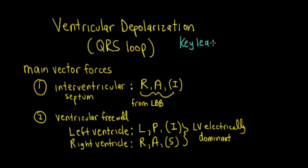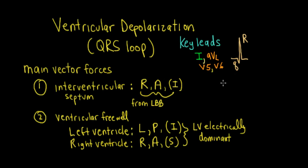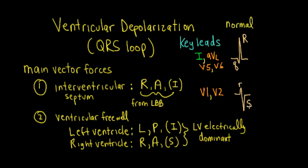In summary, for key leads 1, AVL, V5, and V6, we should see a small Q and a dominant R — the small Q representing interventricular septal depolarization and the dominant R from the left ventricle free wall forces. For leads V1 and V2, the rightward anterior leads, we see a small septal R deflection and a dominant S wave. These are the normal QRS complexes expected in these key leads. That concludes this video on vector cardiography and the QRS vector cardiogram loop.